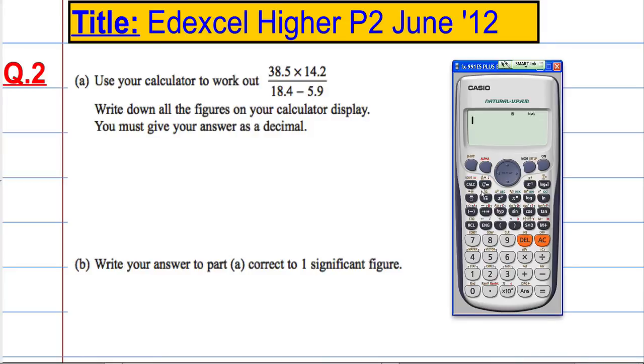Right, so let's get the calculator out. What I want to do is I want to put exactly what I see here into my calculator. So, 38.5 times 14.2 over 18.4 minus 5.9. So I put in exactly what I see here using the calculator.